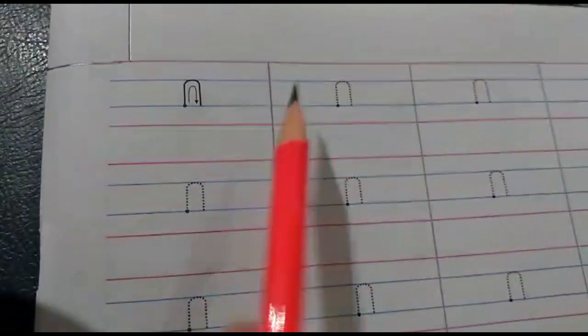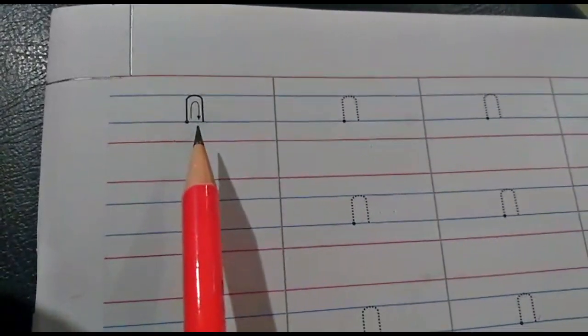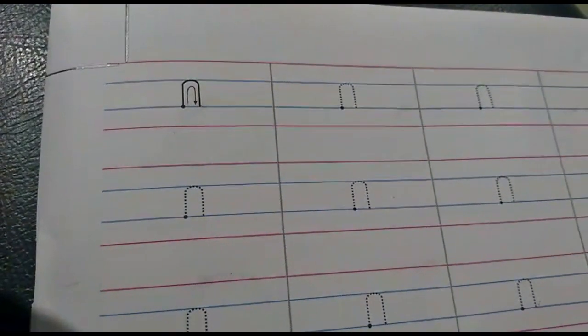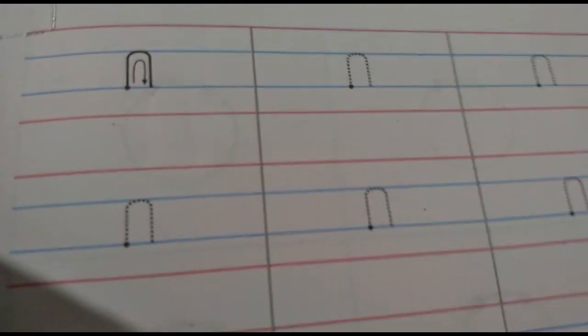Now children, we are going to learn to write the 'n' pattern in the four lines. Can you see the 'n' pattern is only written between the two blue lines? It is not touching the red line. Can you see, children, only between the blue lines.